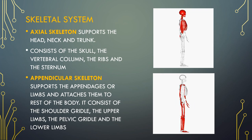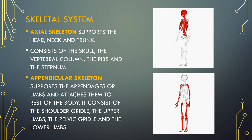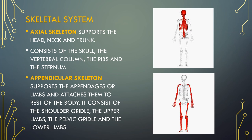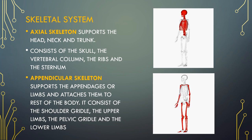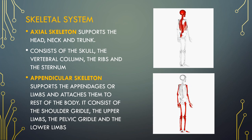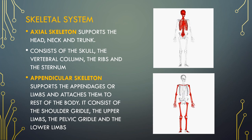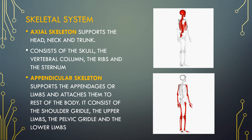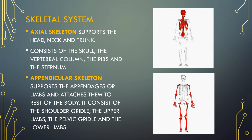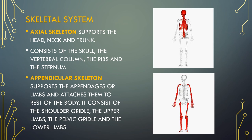The adult axial skeleton consists of 80 bones. It supports the head, neck and trunk, and consists of the skull, the vertebral column, the ribs and the sternum. There are a total of 126 bones in the appendicular skeleton and it supports the appendages or limbs and attaches them to the rest of the body. It consists of the shoulder girdle, the upper limbs, the pelvic girdle and the lower limbs.